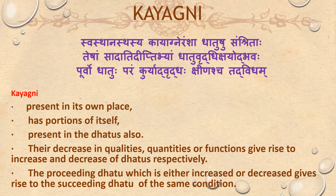Kayagni, present in its own place, has portions of itself present in the Dhatus also. Their decrease in quality, quantity, or function gives rise to increase and decrease of the Dhatus respectively. The preceding Dhatu, which is either increased or decreased, gives rise to the succeeding Dhatu in the same condition.